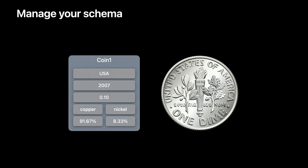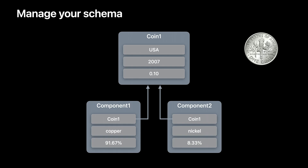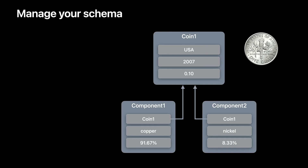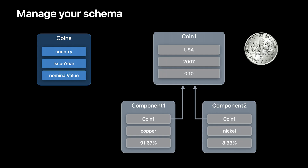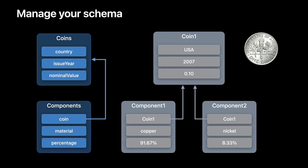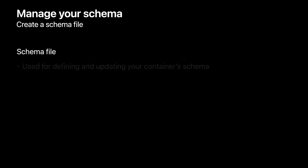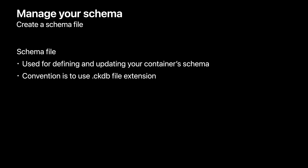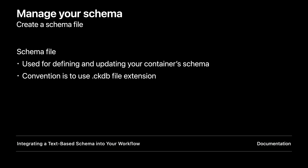Let's learn about how you can use cktool.js to manage your container schema. In my app, I want to store information such as an American dime issued in 2007. This coin is composed of copper and nickel, and the value stamp on it is one-tenth of an American dollar. After thinking about how to store this data, I decided to store information about the coin's composition as records separate from the other details about the coin. I identified two record types: Coins, which stores its country reference, issue year, and nominal value; and a Components record type that stores a reference to a coin it describes, along with the material and its percentage in the coin. Now I can create a text file in CloudKit's schema language to describe it, using the .ckdb extension. For more information about CloudKit's schema language, refer to the Integrating a Text-Based Schema into Your Workflow documentation article.